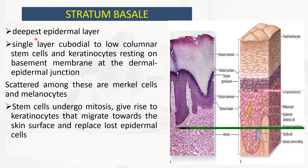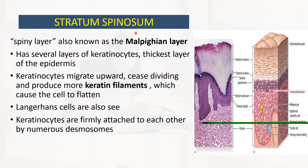The stratum basale is the deepest epidermal layer and is a single layer of cuboidal to low columnar stem cells and keratinocytes resting on the basement membrane at the dermo-epidermal junction. Scattered among these are Merkel cells and melanocytes. Stem cells undergo mitosis, giving rise to keratinocytes that migrate towards the skin surface and replace degenerating epidermal cells.